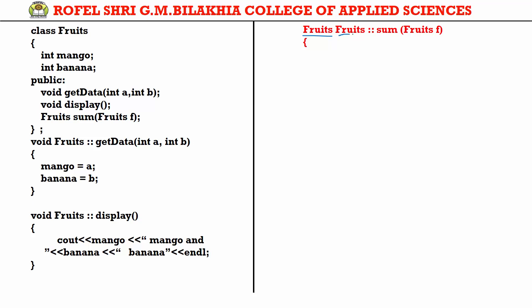In the sum function definition: the return type is fruit, then fruit with scope resolution operator indicates that sum belongs to the fruit class. The parameter data type is fruit and the object is F. Inside the function, we create another object called FA. As stated, when an object is returned by value from a function, a temporary object is created within the function to hold the return value. So FA is that temporary object — it holds the return value, and we return FA.